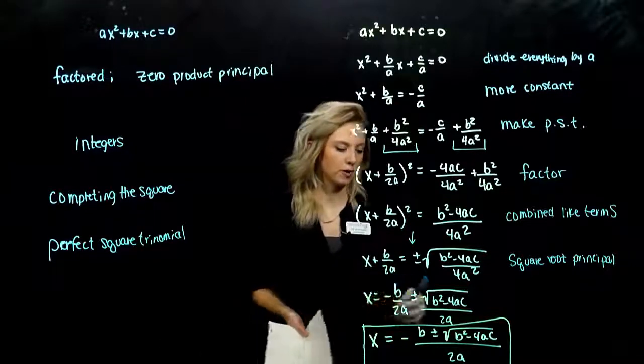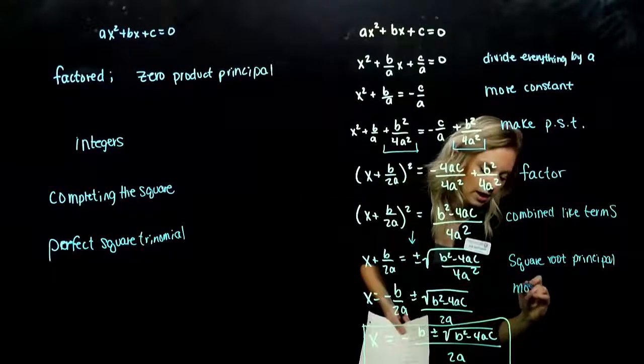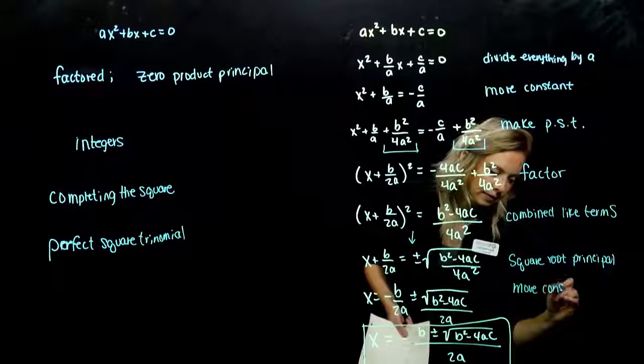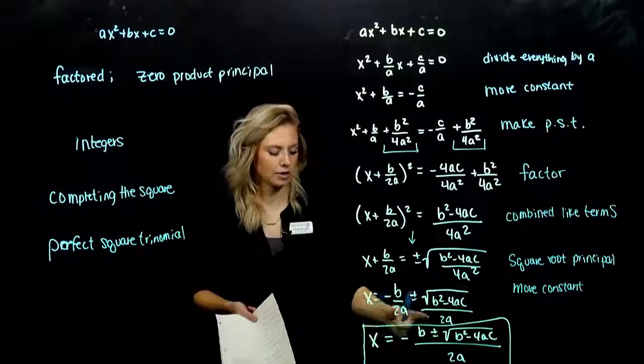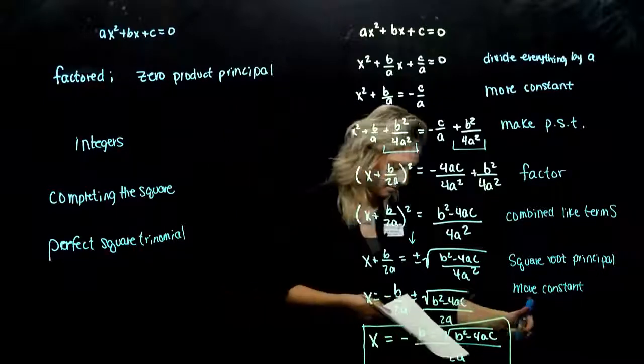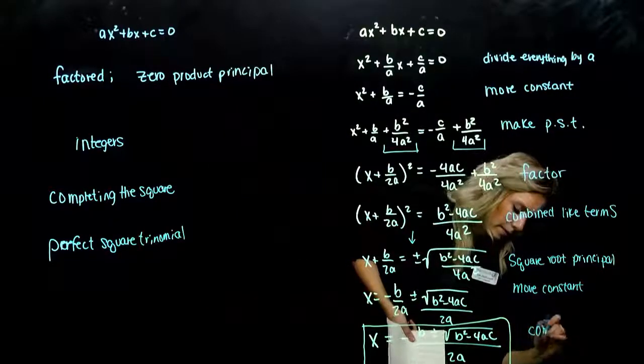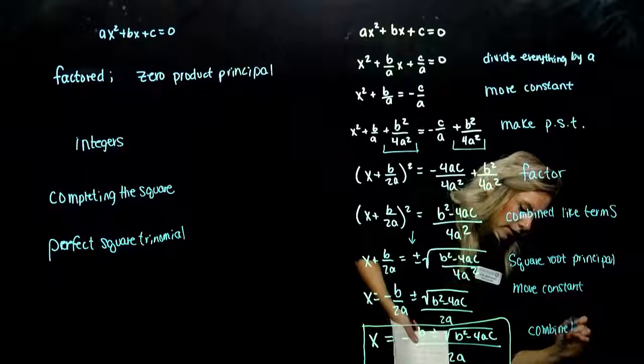Then what happened? Constant term that was on the left, we moved it over to the right. So we moved the constant again. And after that, we had common denominators, 2a and 2a. So we just combined like terms again.